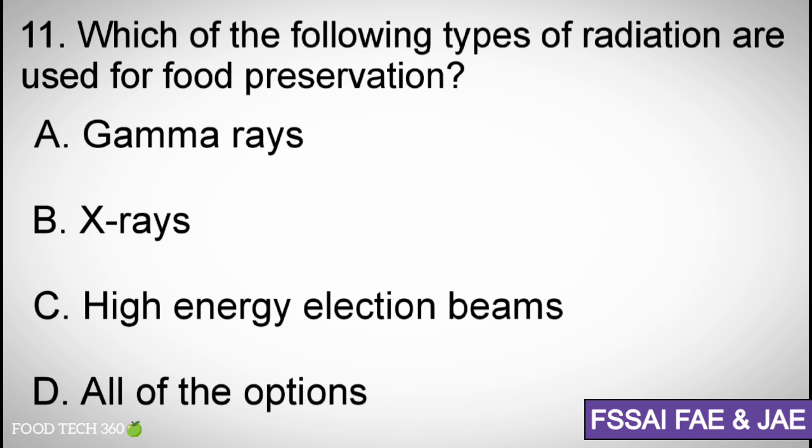Question number 11. Which of the following types of radiation are used for food preservation? Options A. Gamma rays, B. X rays, C. High energy electron beams, D. All of the options. Correct answer D. All of the options.